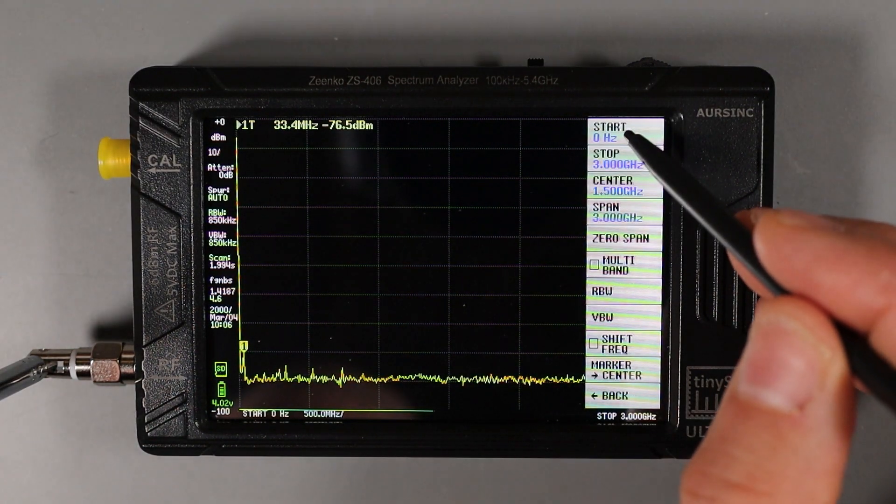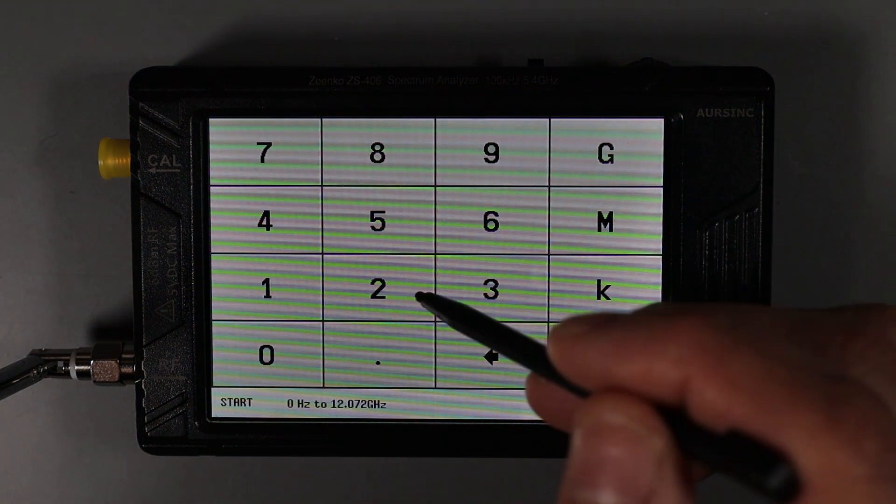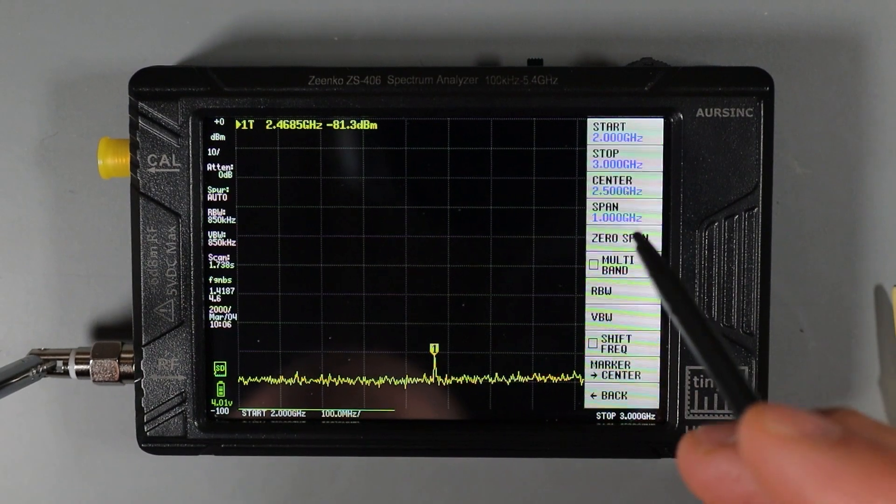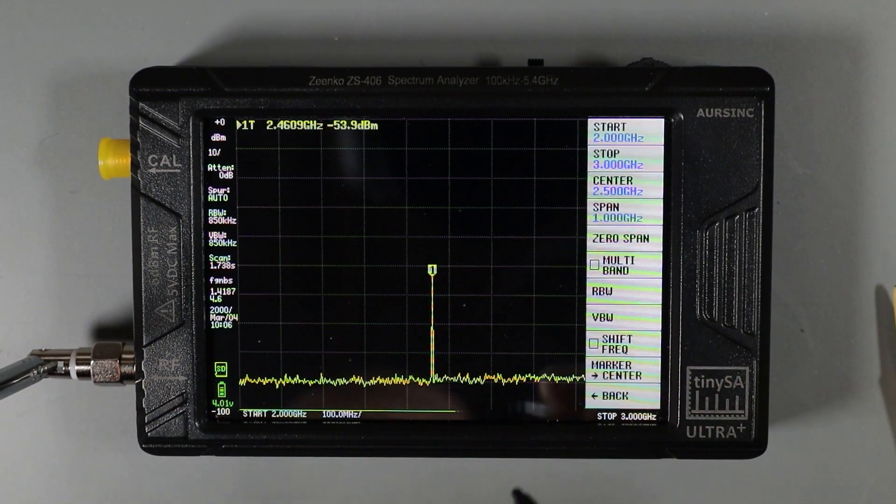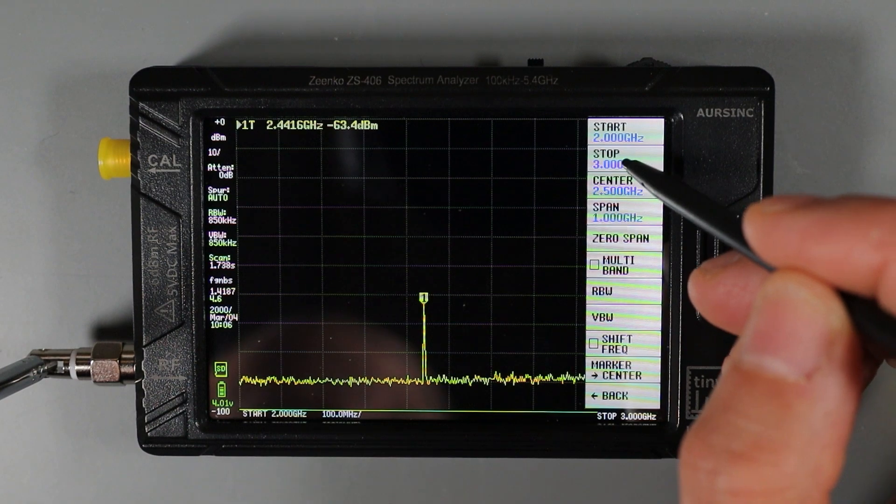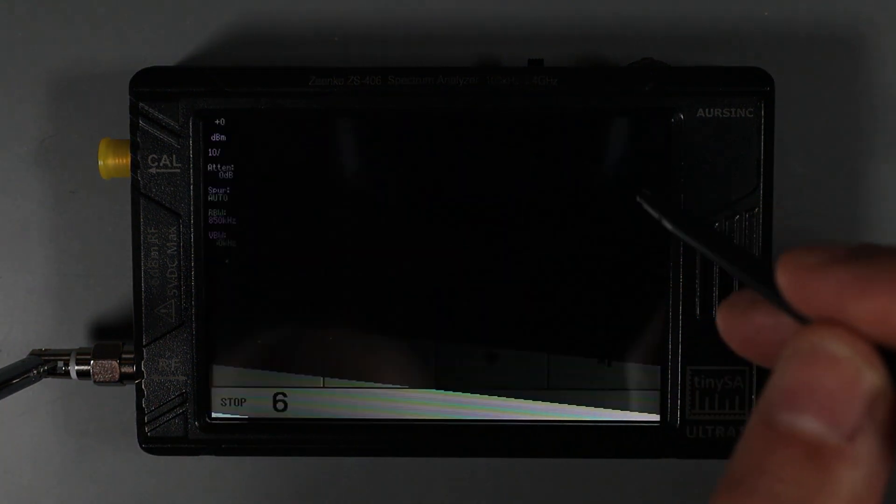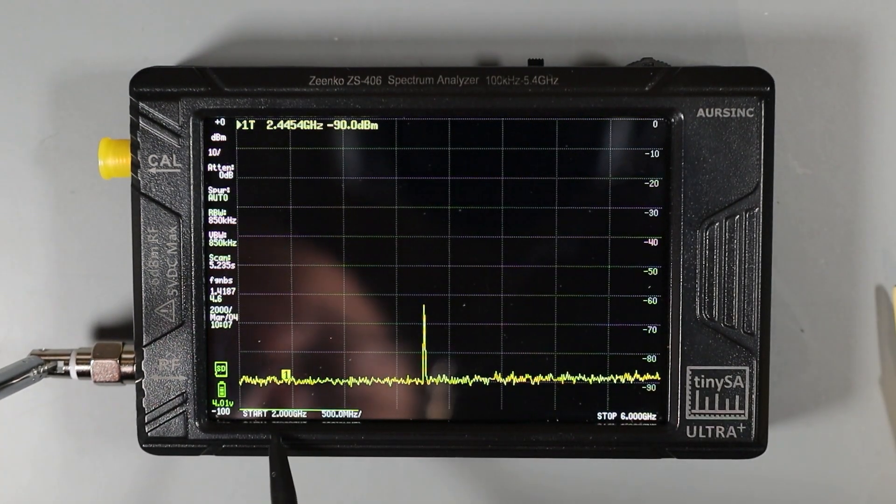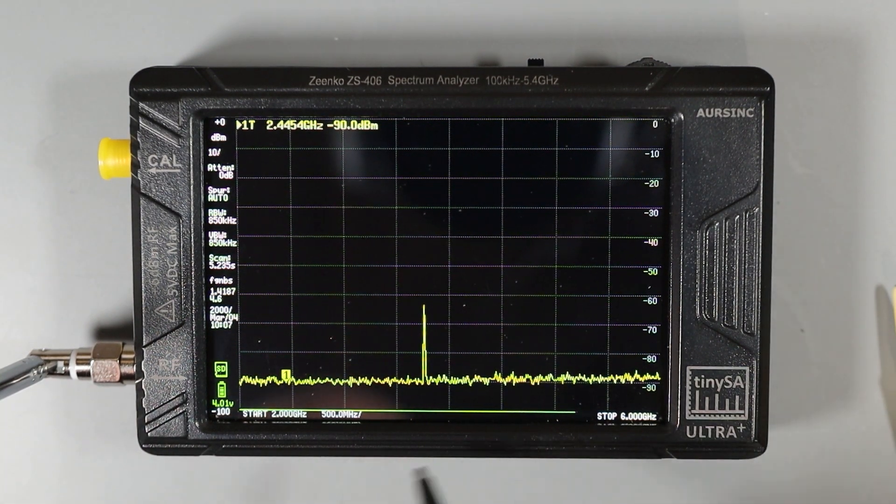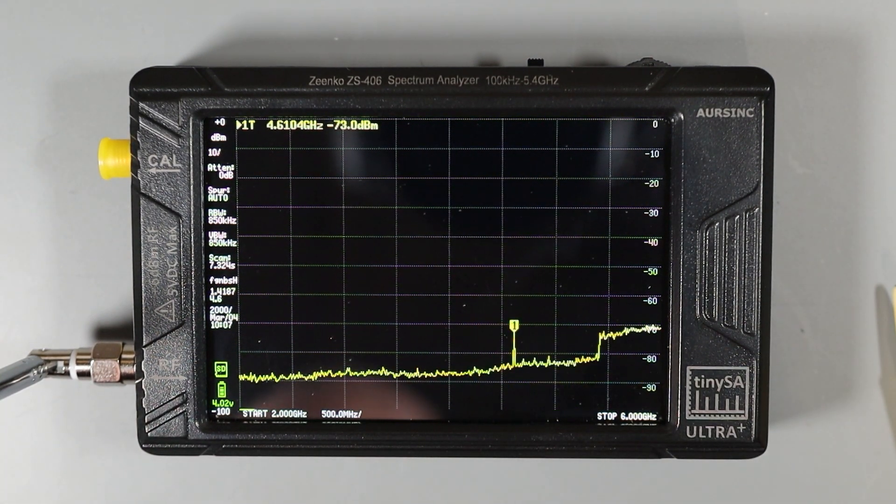Instead of starting at zero, I'll set this so it starts at two gigahertz and you can see now it's scanning much faster. As I mentioned before, the top frequency in ultra mode is somewhere around 5.4 gigahertz. So I'm going to enter a stop frequency of six gigahertz and you can see now we're scanning between two and six and the scan speed again is much slower because that's a pretty wide swath of spectrum to look at.